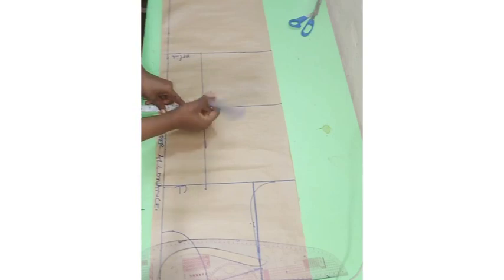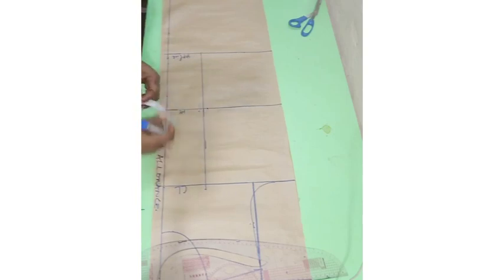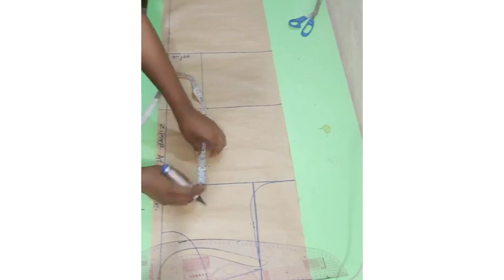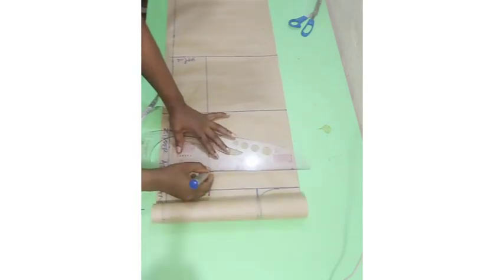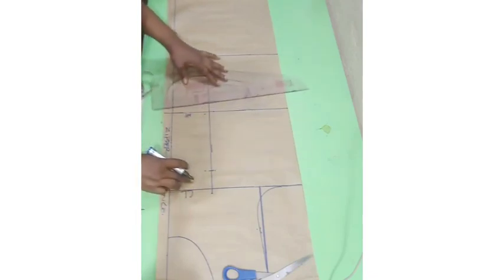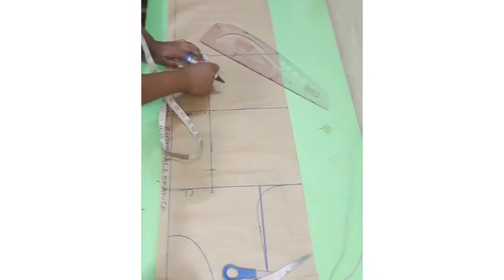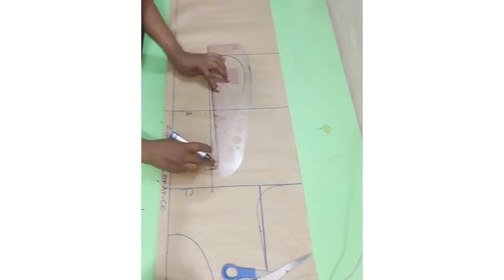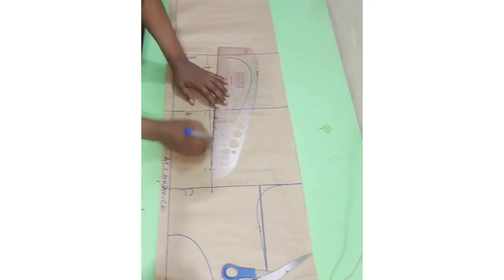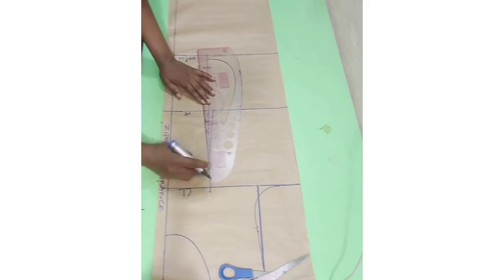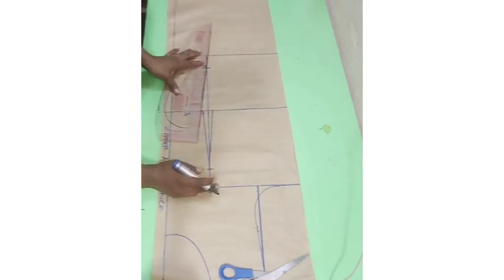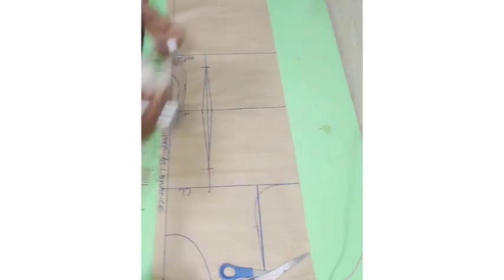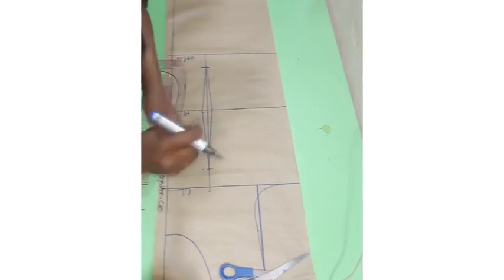I'm taking half an inch on both sides of my darts to form the darts, then coming down two inches from the chest line to determine where the dart starts. To determine where it will stop, remember for the front we came up from the hip two inches — that's where the dart will stop. Connect your half-inch marks to the upper and lower part of your dart line. We then proceed to imputing our horizontal measurements.